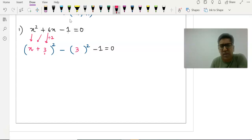Same number 3, we will write here. When you expand the bracket, you will get 3². To balance it, we have minus 3² here. We combine the constants. So you get x + 3 whole square, minus 3² and minus 1 will give me -10 equal to 0.